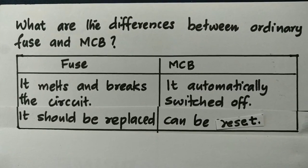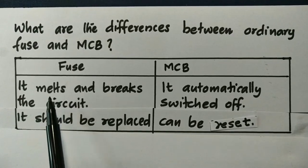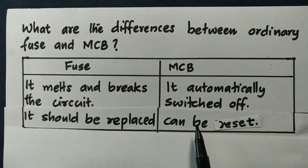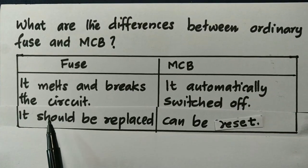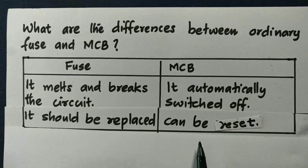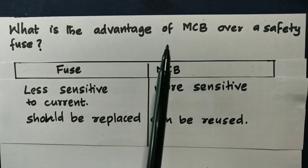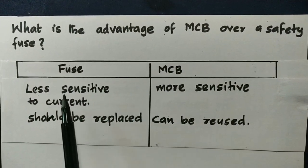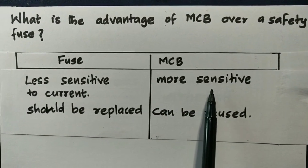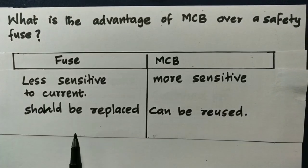We are asking three questions. Question: What is the difference between fuse and MCB? Fuse is melted and breaks the circuit. MCB is an automatic switch off. Fuse will require replacement of the fuse wire, then the circuit will reset. Fuse is more sensitive to current.